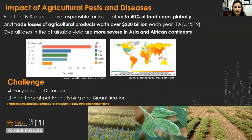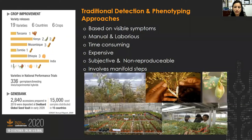Early disease detection and rapid phenotyping remains a real challenge for timely management and deployment of resistant cultivars in farmers' fields. Most current disease detection and screening methods are manual, laborious, and require huge operational cost and specialists to operate.